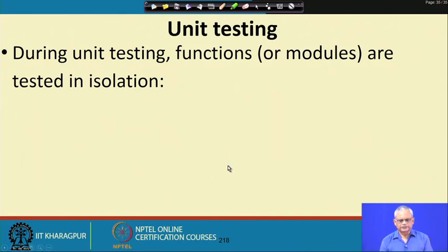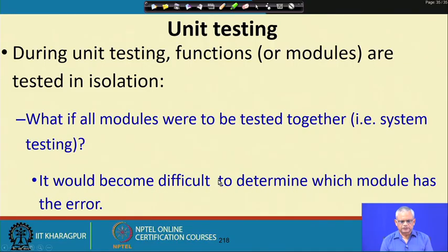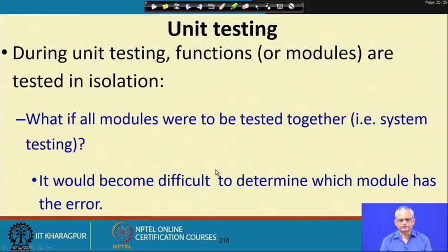Let us look at unit testing. The units — functions or modules — are tested in isolation. Why not test all modules together? If we do not do unit testing it would be difficult to determine which module has the error. In unit testing we are testing only a small unit and quickly debug and correct. If we skip unit testing, for each bug we have to trace which unit has the problem, making it much more expensive.